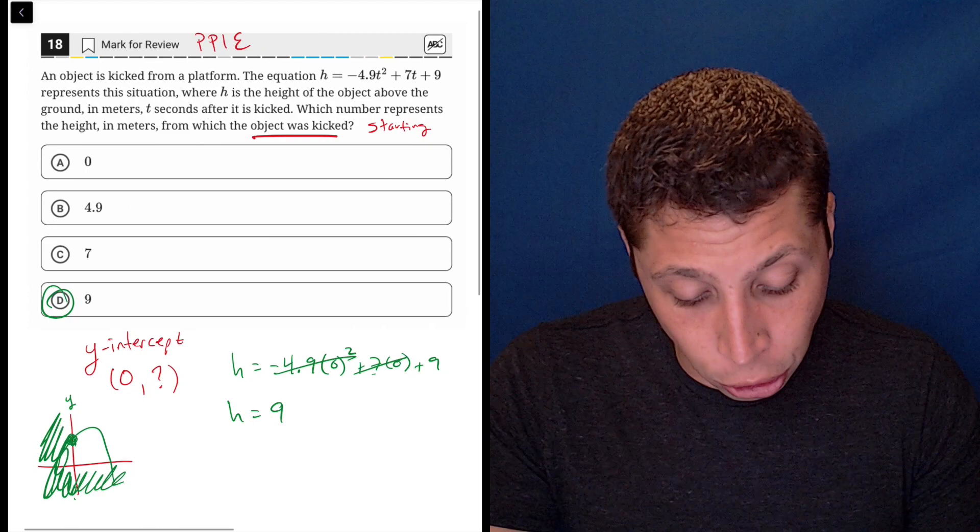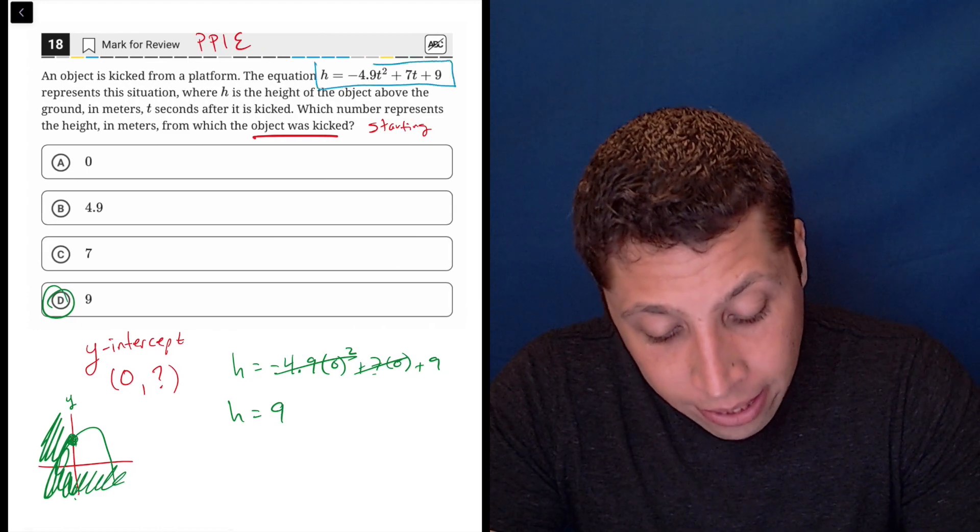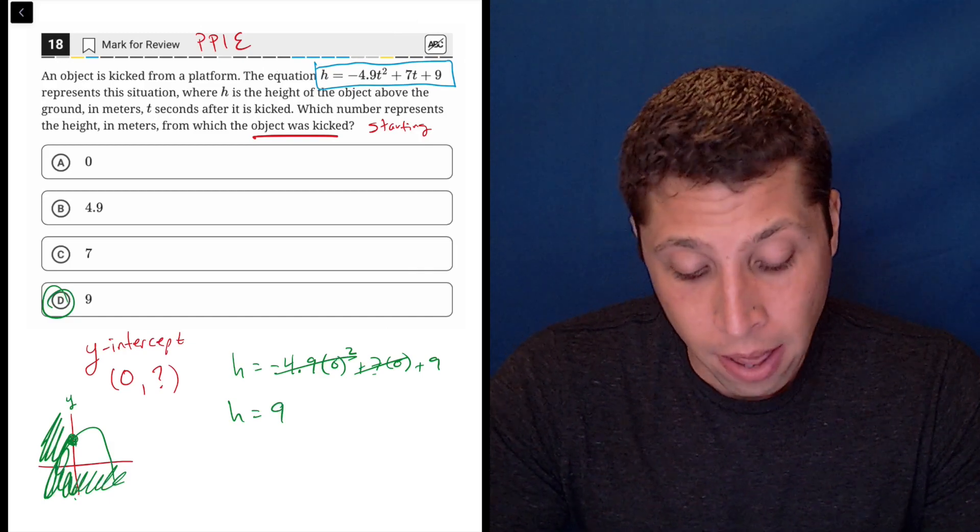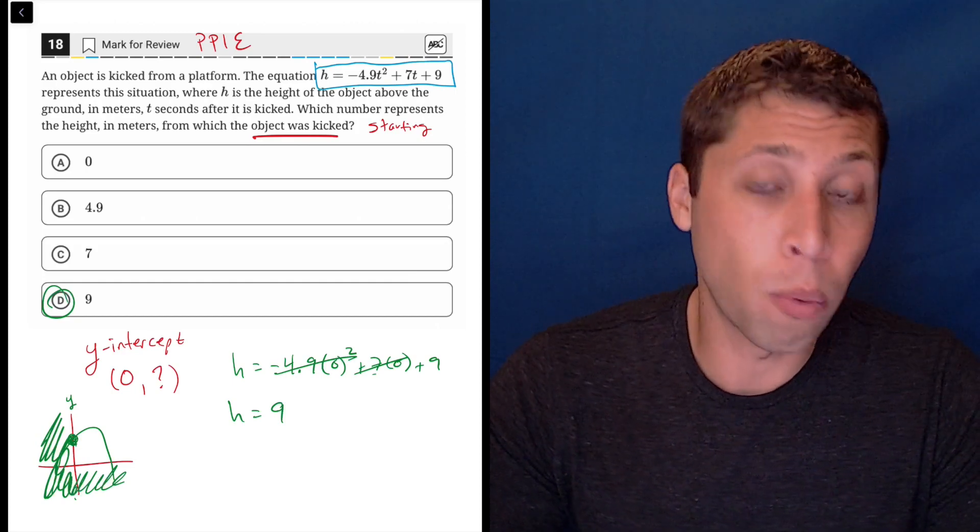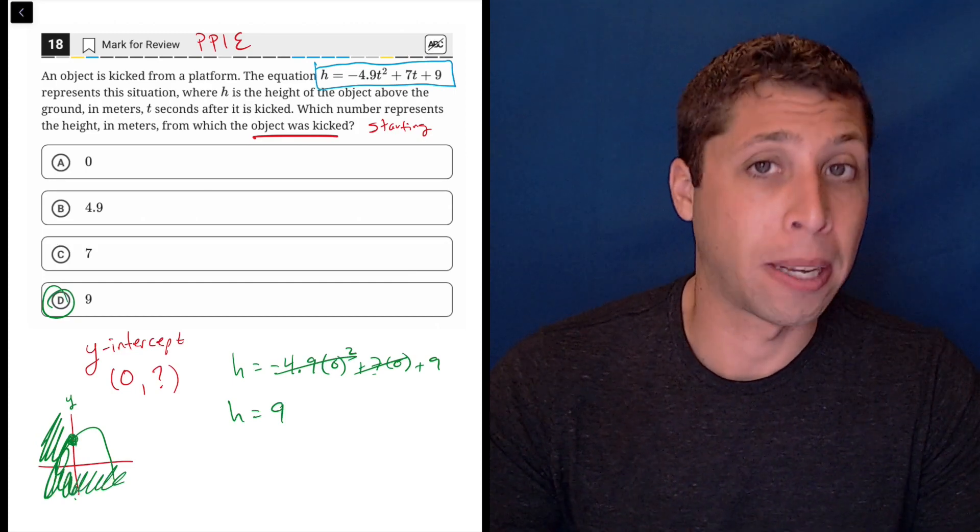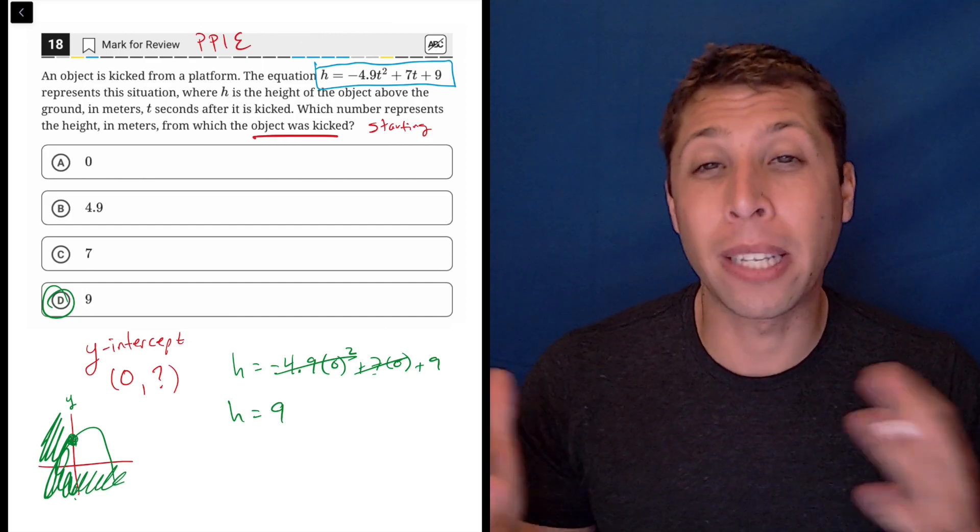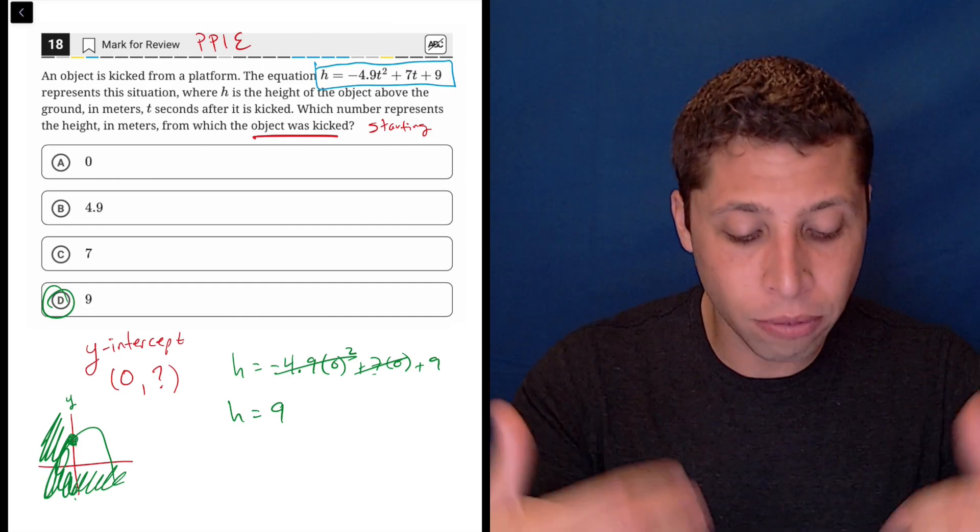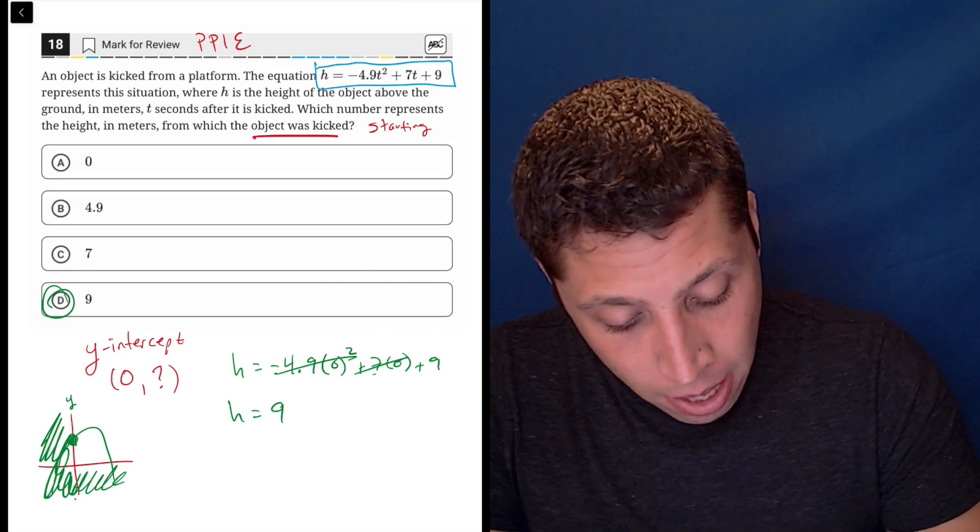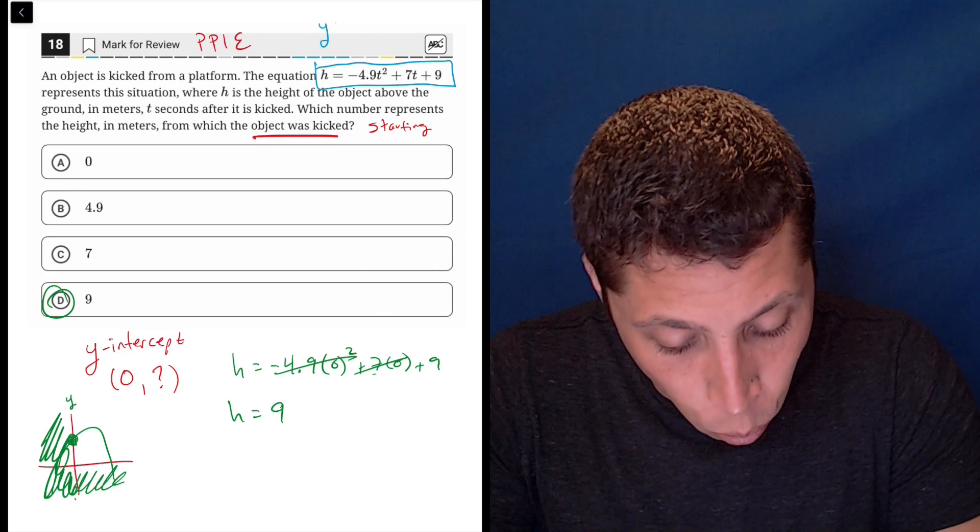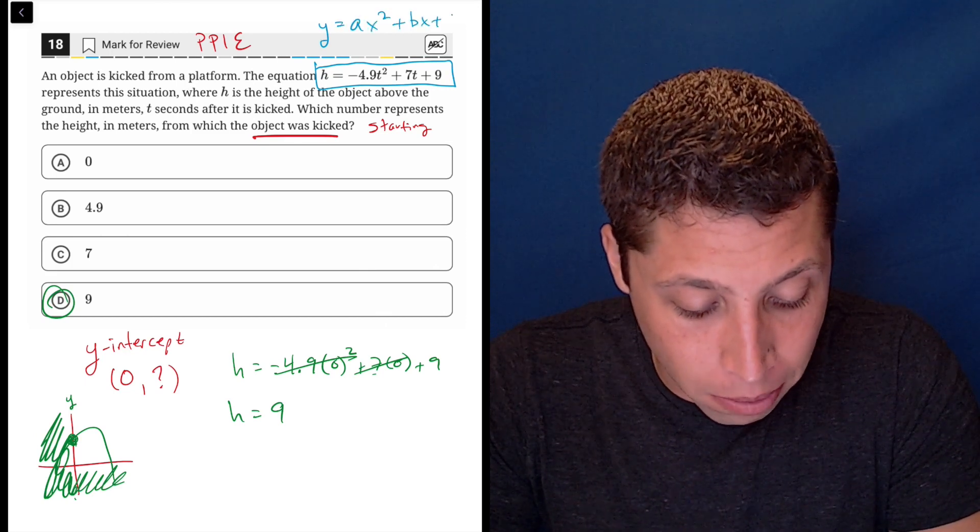Now, we could have gotten this in a shorter way because when I look at this equation, I recognize that it is in a specific format that is really common for quadratics. For lines, we only have really one format that matters, y equals mx plus b. But parabolas have lots of different ways of writing the equation because there are different things going on that we might care about. And this version specifically gives us the y-intercept. This version matches with y equals ax squared plus bx plus c.